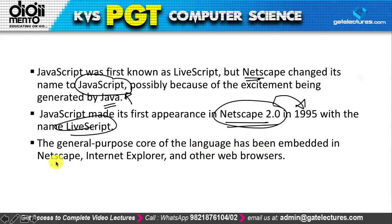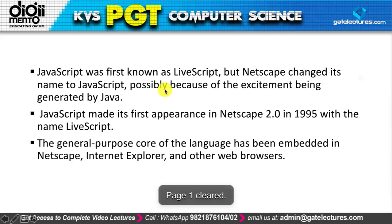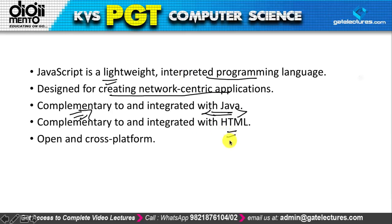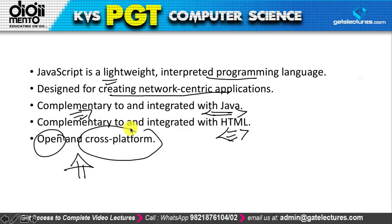The core of the language has been embedded in Netscape, Internet Explorer, and other web browsers, which use a component called an execution engine to run JavaScript. JavaScript is a lightweight, interpreted programming language designed for creating network-centric applications, complementary to and integrated with Java and HTML.